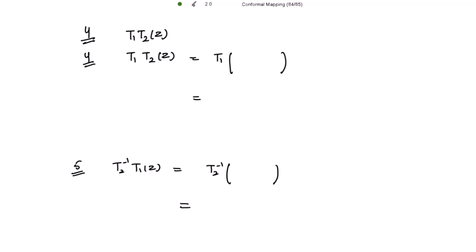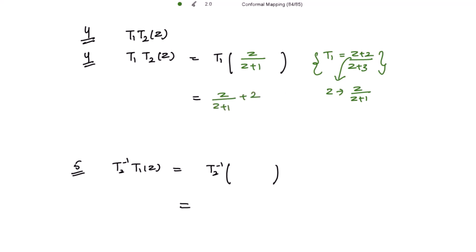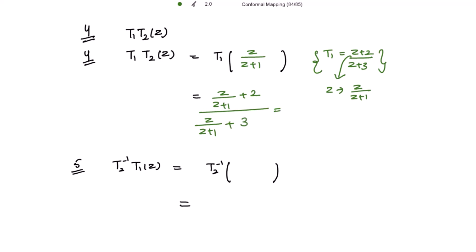Calculating t1∘t2(z): we write this as t1 applied to t2(z), where t2(z) = z over (z + 1). To calculate t1 of z/(z+1), we replace z with z/(z+1). The numerator becomes z/(z+1) + 2 and the denominator becomes z/(z+1) + 3. Solving this completely gives (3z + 2) over (z + 3).